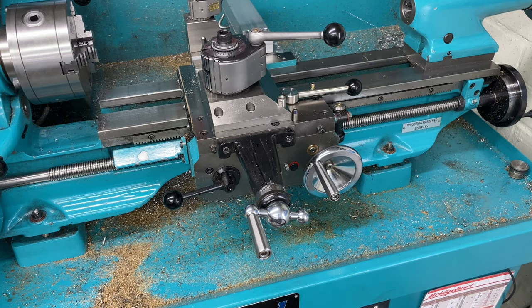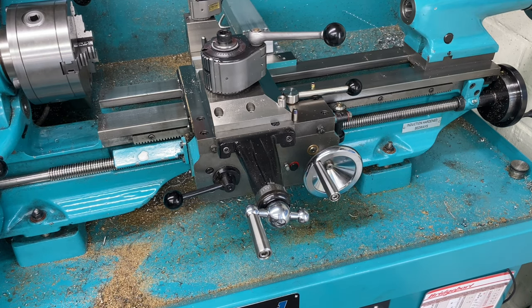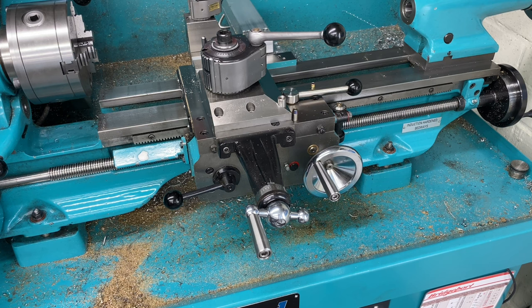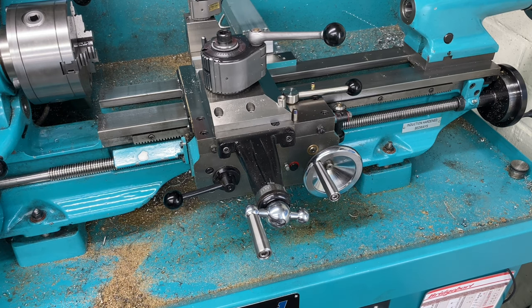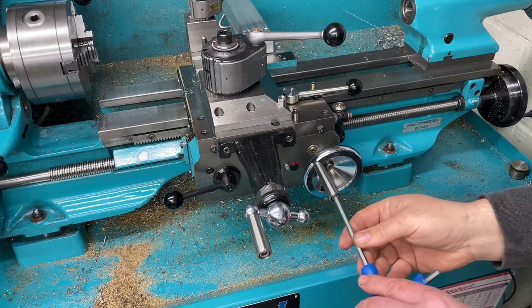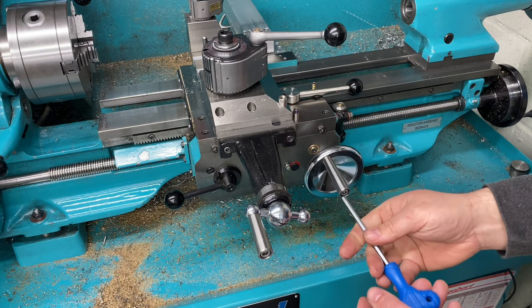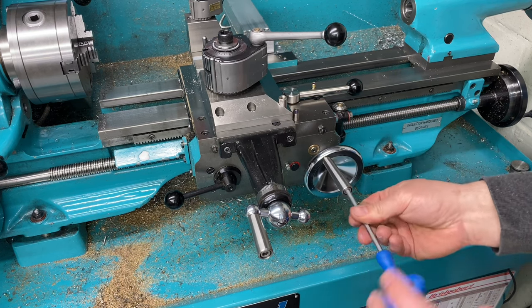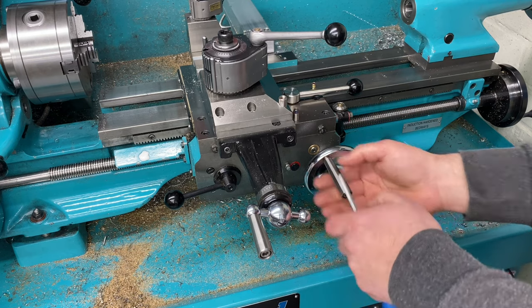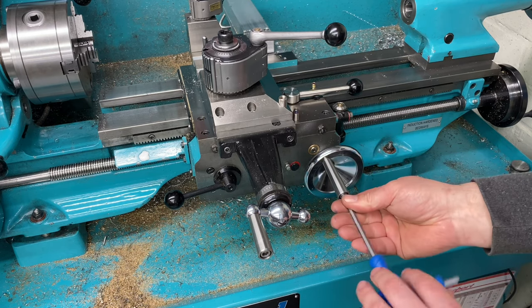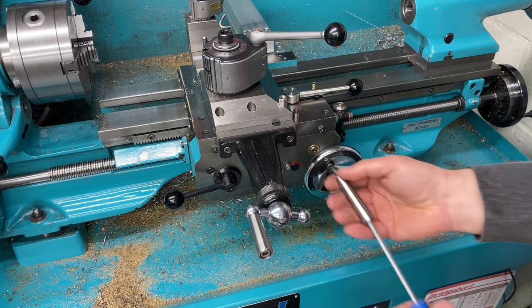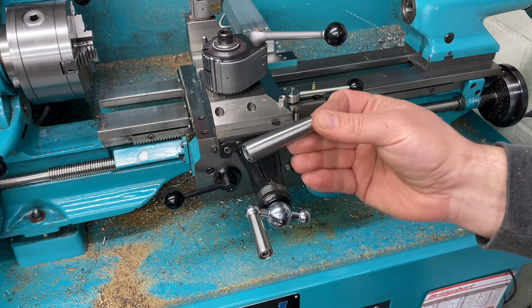So they come off quite easily. They're M6 cap screws so they take a five millimeter Allen key. I'll whip this off now and then I'll take it apart on the bench and show you how I've done it.